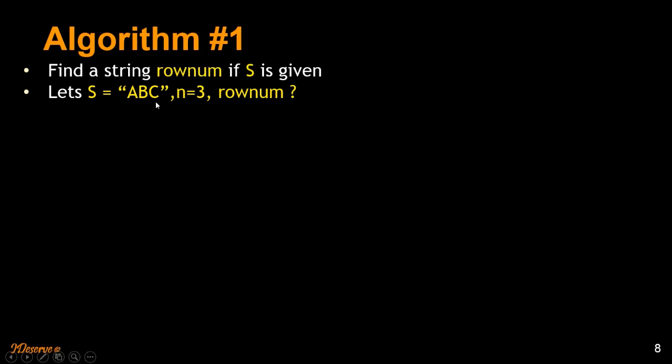So let's look at the first algorithm. We need to find a row number if s is given. So for example, if you are given s equal to ABC, we need to find out the row number corresponding to this string. We are going to use the formula here. What is the formula? This is the formula.